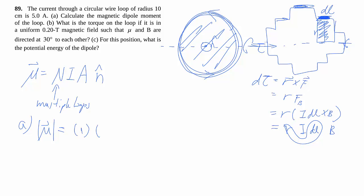So here we have a single wire loop, so n is equal to 1, i is equal to 5 amps, then area is pi r squared, of course, given that the radius is 0.1 meters.